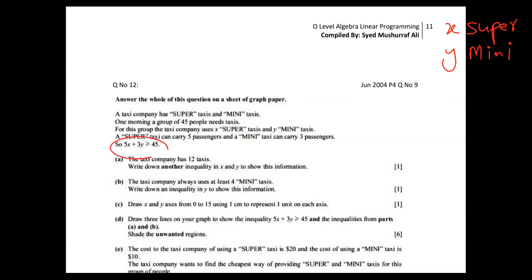This first inequality is given, so no need to prove it. I'm just copying it as it is: 5X plus 3Y is greater than or equal to 45. This part is very clear — I'm just noting it down.